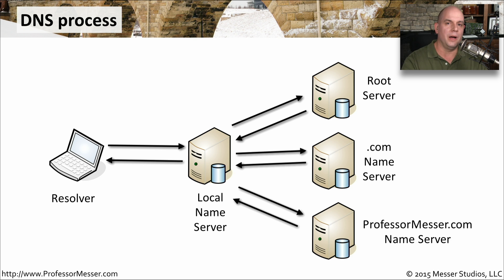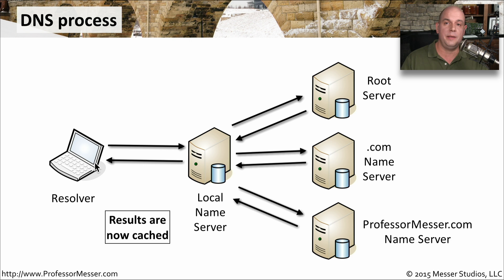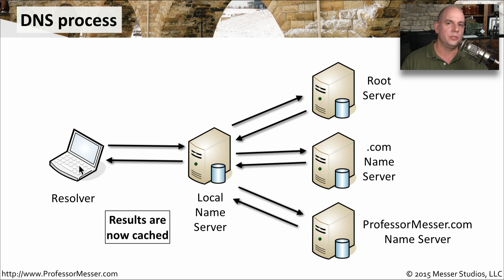At this point, we've gone through a lot of work just to figure out where all of these different servers are and what the IP address ultimately is of professormesser.com. So all of this content is cached. There is a local DNS cache on the resolver, there is a cache on the local name server, and elsewhere on these domain name servers as well. That way, if we are asked again very quickly by someone else on the network where is professormesser.com, we don't have to go through this process again — we can simply have the local name server respond back to the resolver. And as you'll see in the next video, we will talk about those timers and how often information is cleared out of those caches.